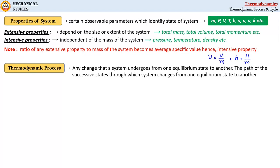In this study we describe this change on property plots with the help of system properties. Thus a process can be defined as the path of successive states through which a system changes from one equilibrium state to another.